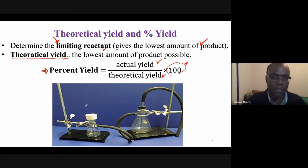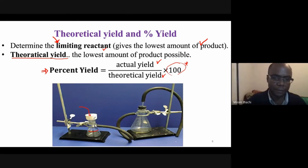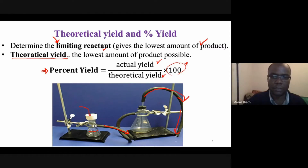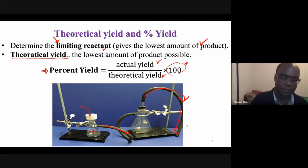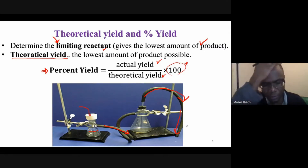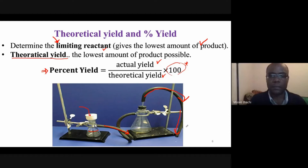This is the setup for filtration: you pour your mixture through filter paper on the funnel, and the filtrate is drawn down by suction pressure through a tube connected to a suction pump. You can see this in the two videos posted on Moodle for the experiment.